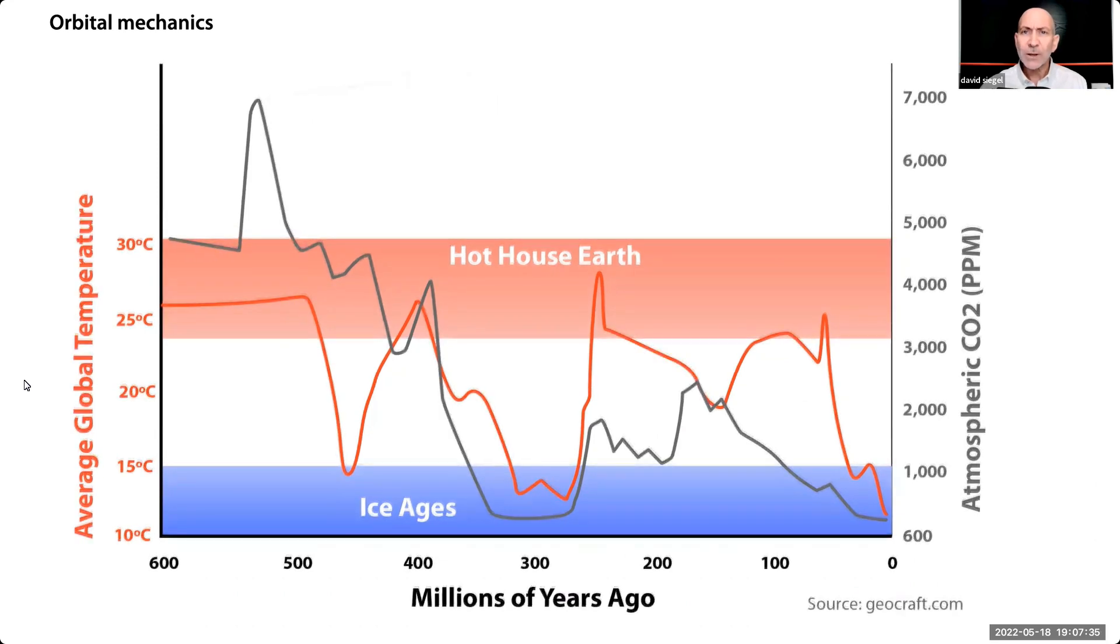If the IPCC is right about CO2, then the high CO2 regimes we've seen in the past should have ended in a permanently hot Earth. Instead, whenever temperatures become too extreme, they go back toward the middle.